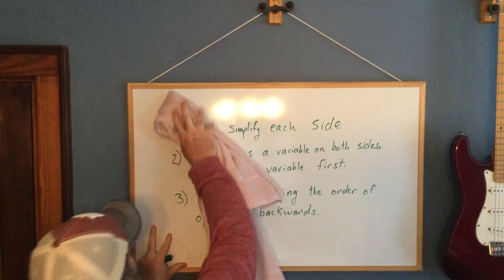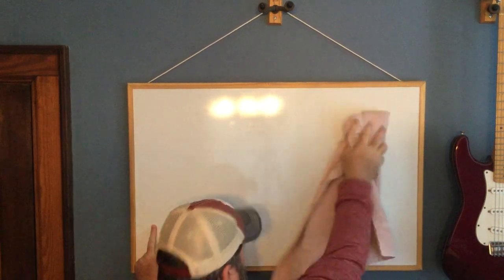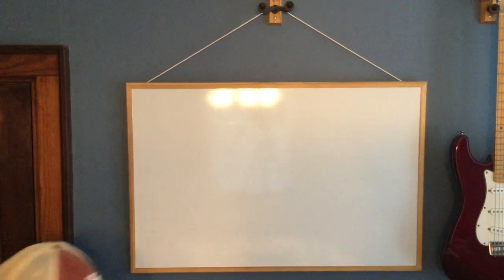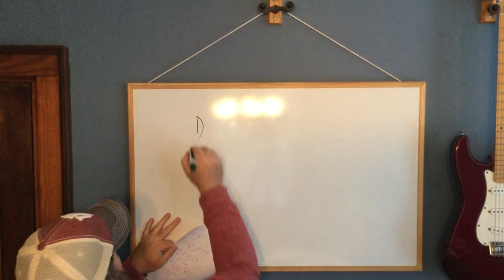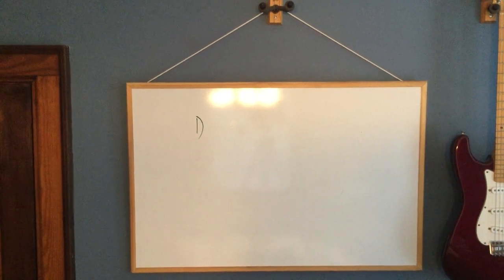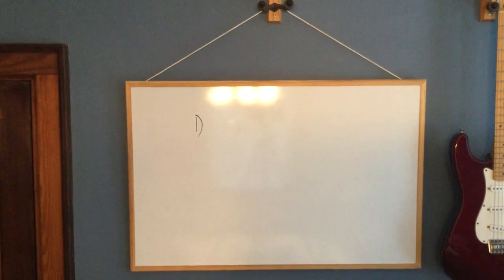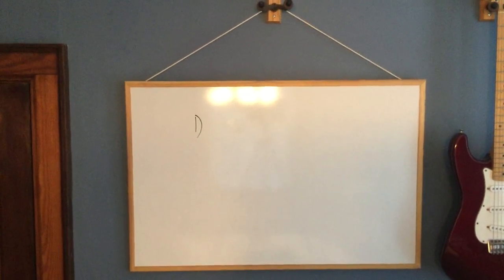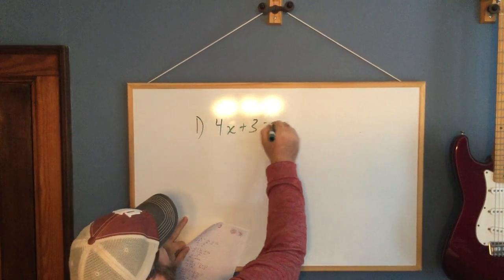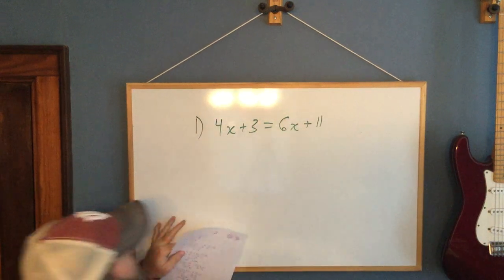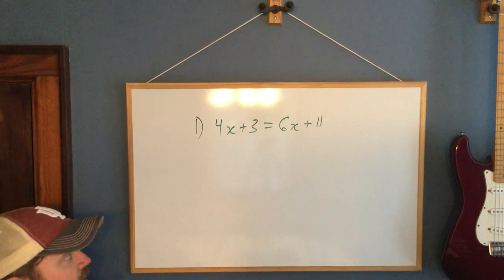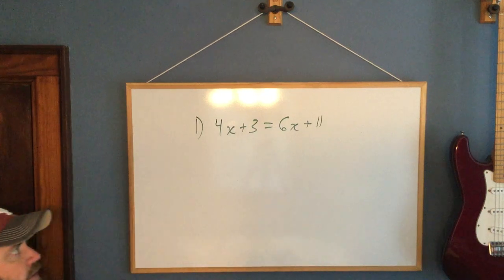So let's go through five examples today. We'll start out with a very simple example. Number one, we have 4x plus 3 equals 6x plus 11. If I look on the left side, I have two terms that are unlike, so I can't simplify. And the same is true on the right, so there is no simplifying to do.